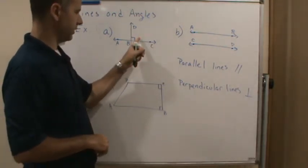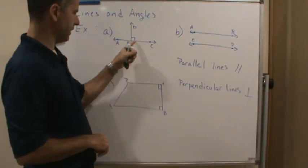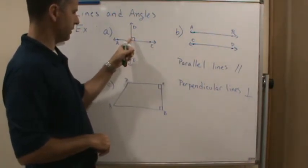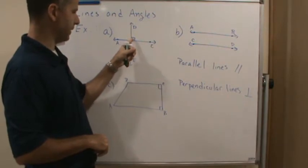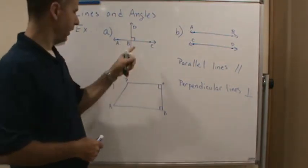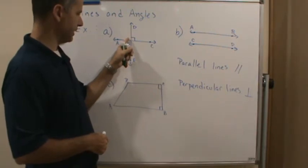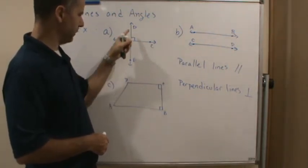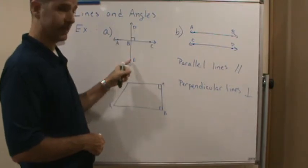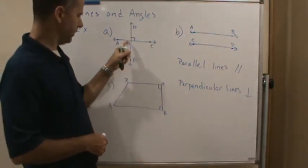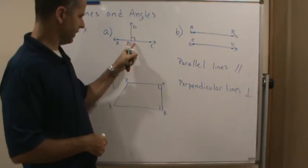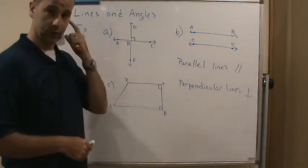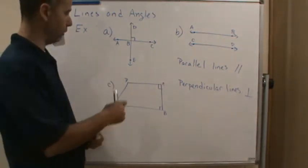The reasoning is: if one angle is 90 degrees, this line is a straight line, so this angle has to add with the adjacent angle to equal 180 degrees. If this is 90, then that one must be 90 as well. Continuing around, if one angle is 90, all four angles have to be 90. That's why we only put one square symbol here.